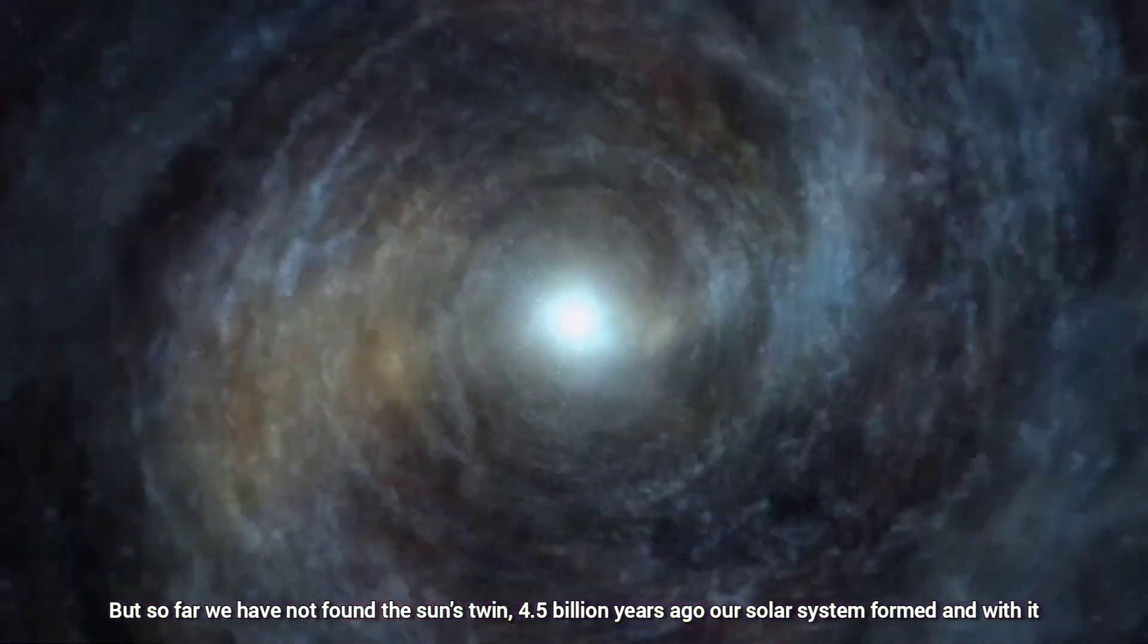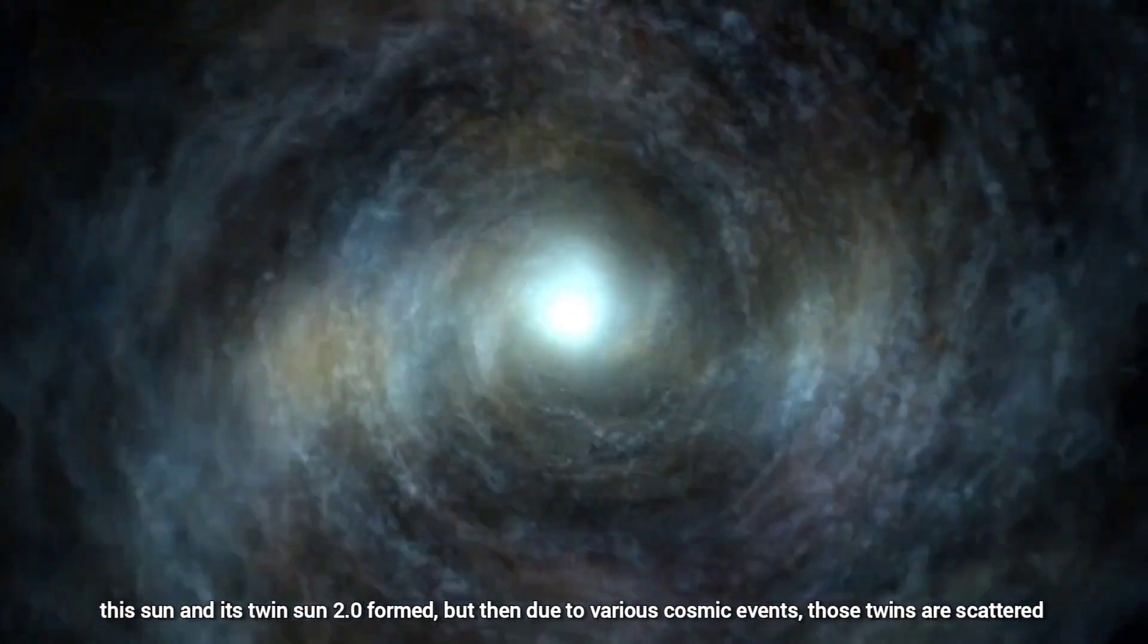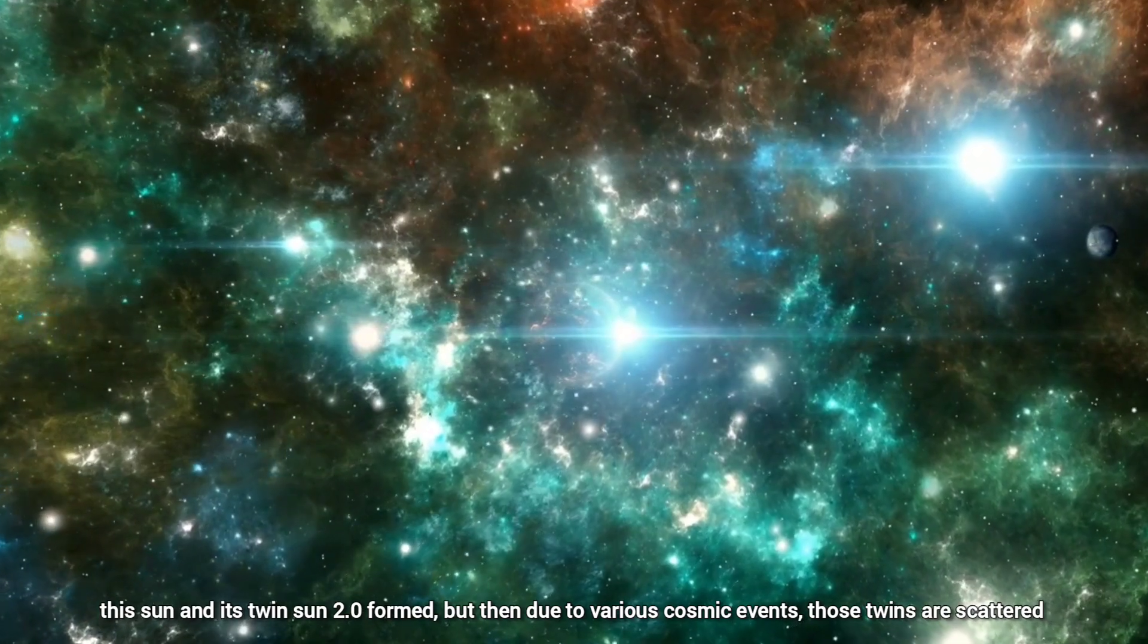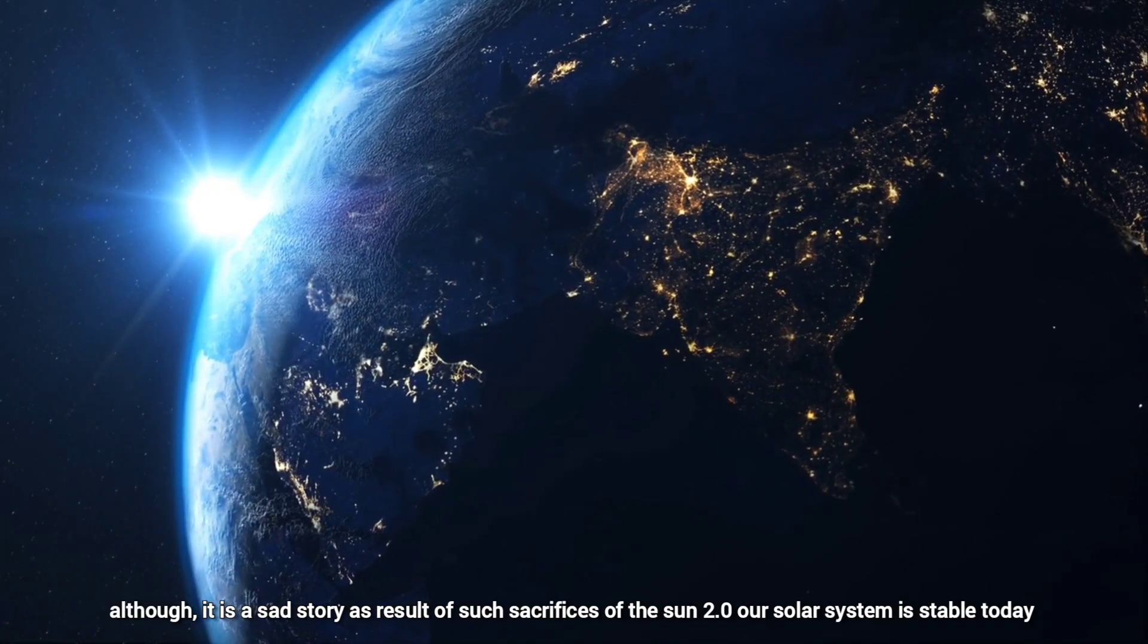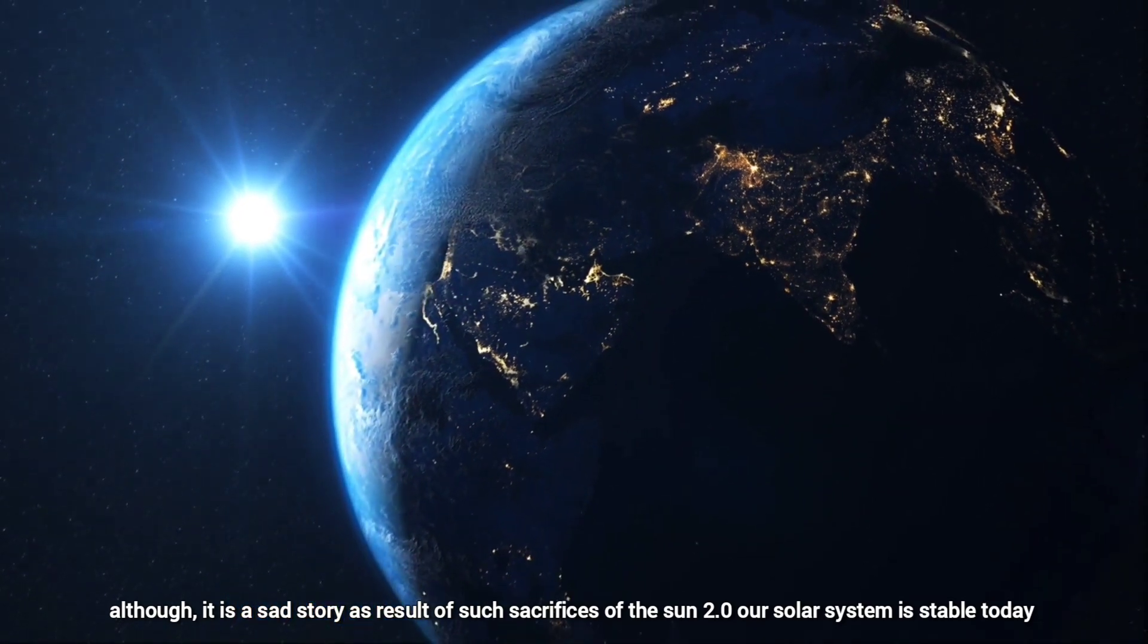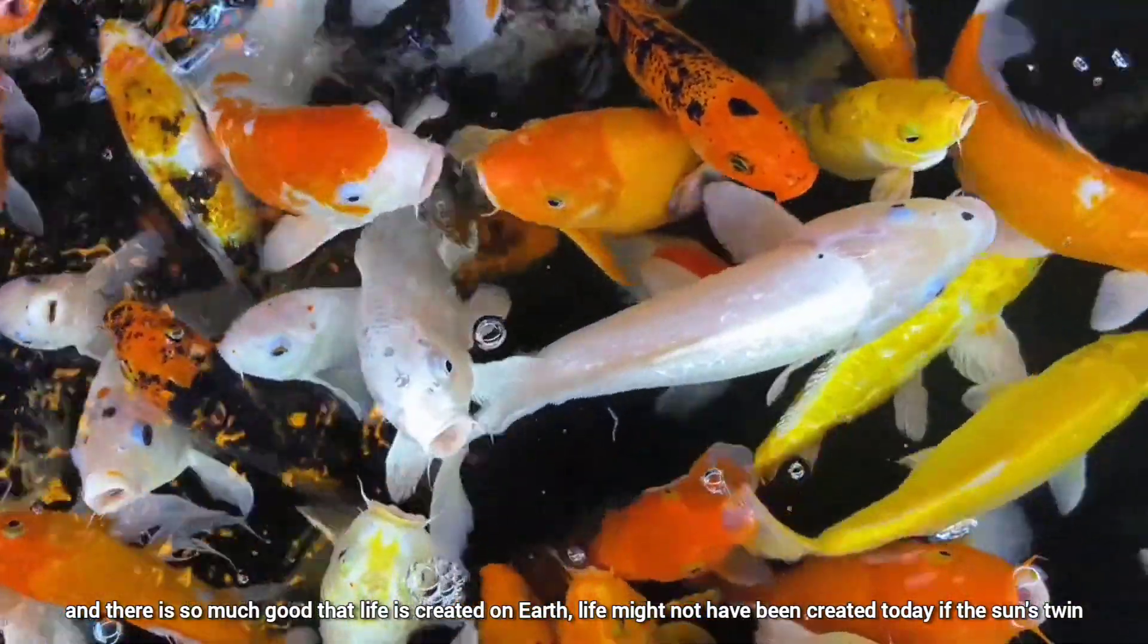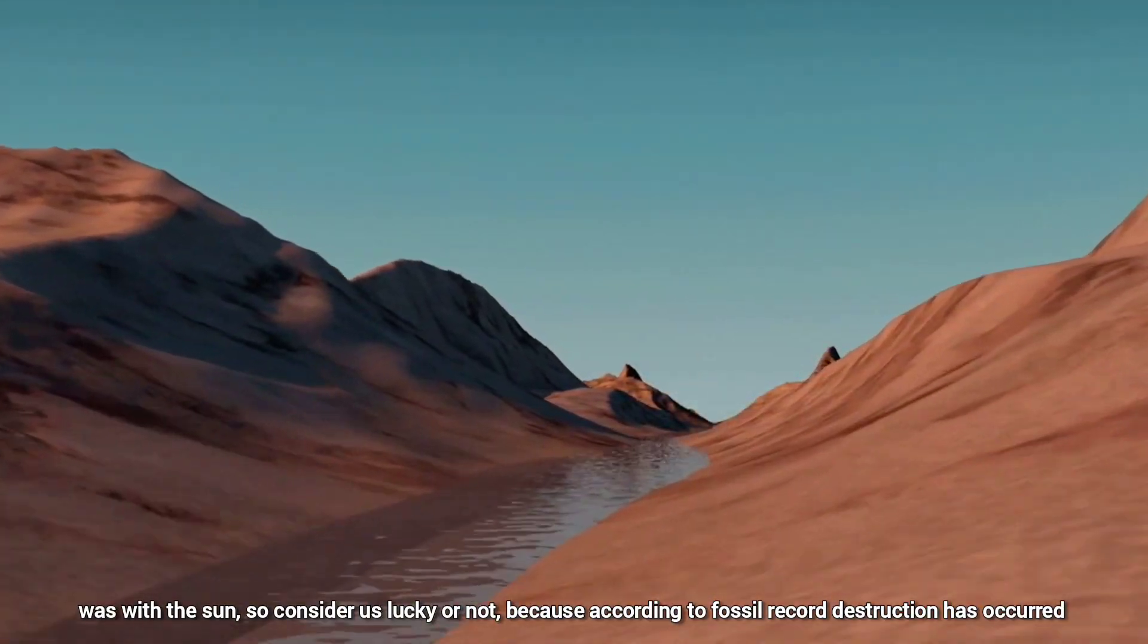4.5 billion years ago, our solar system formed. And with it, this Sun and its twin Sun 2.0 formed. But then due to various cosmic events, those twins are scattered in different parts of the Milky Way today. It is almost impossible to find it. Although it is a sad story, as a result of such sacrifices of the Sun 2.0, our solar system is stable today. And there is so much good that life is created on Earth. Life might not have been created today if the Sun's twin was with the Sun.